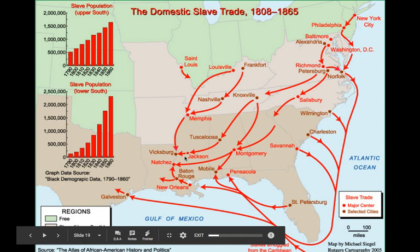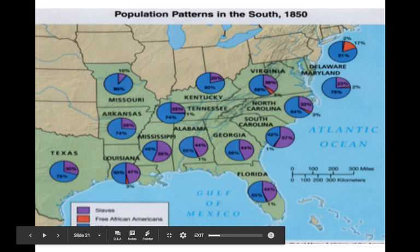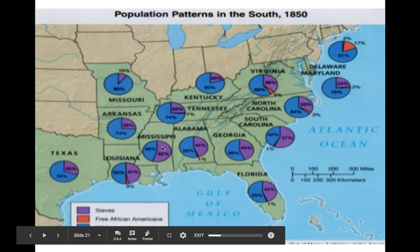This chart shows the population in the South between white and Black, and then free African Americans in red, with slaves in purple. In Mississippi there are more slaves than white people, and you see the same thing in South Carolina. There are some free African Americans — mostly in the upper South and in Louisiana — but in the black belt area there's a higher concentration of African American slaves from South Carolina through Mississippi.